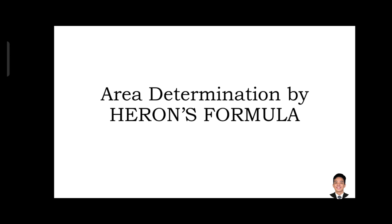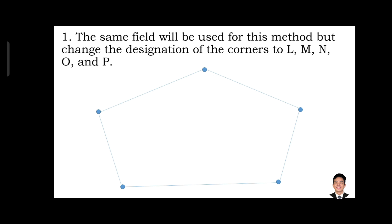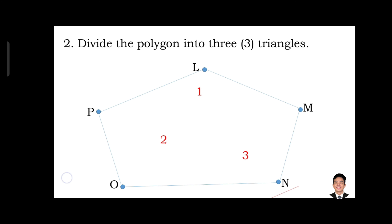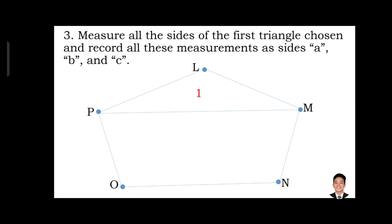Area determination by Heron's formula. The same field will be used for this method, but change the designation of the corners to L, M, N, O, and P respectively. Step 2: divide the polygon into three triangles. Step 3: measure all the sides of the first triangle chosen and record all these measurements as sides A, B, and C.